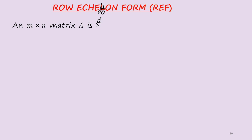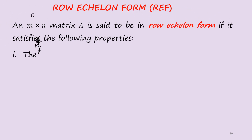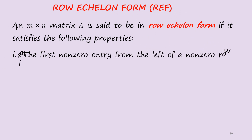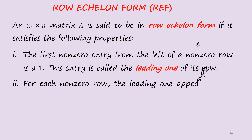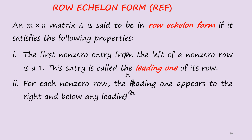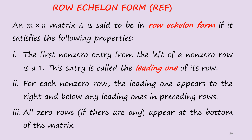Row echelon form (REF): a matrix A is said to be in row echelon form if it satisfies the following properties. First, the first non-zero entry from the left of a non-zero row is a 1, called the leading one. Second, for each non-zero row, the leading one appears to the right and below any leading ones in preceding rows. Third, all zero rows, if any, appear at the bottom of the matrix.